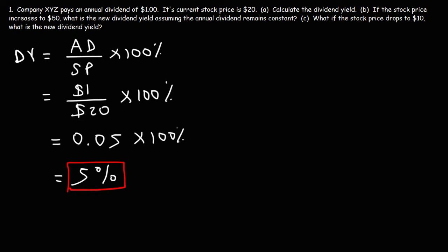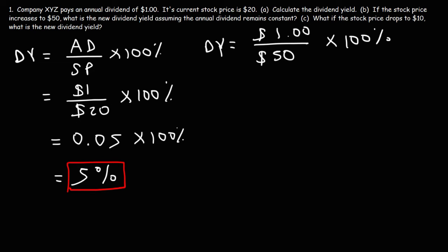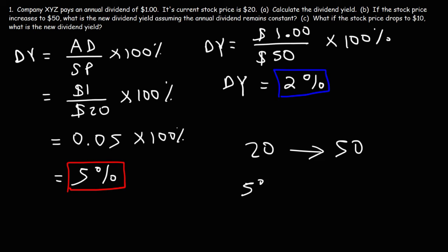Now let's move on to Part B. If the stock price increases to $50, what is the new dividend yield, assuming the annual dividend remains constant? The annual dividend is still $1, divided by the new stock price of $50, times 100%. $1 divided by $50 is 0.02, and 0.02 times 100% gives us a dividend yield of 2%. Notice what happened: as the price went up from $20 to $50, the dividend yield decreased from 5% to 2%. When the price of the stock goes up, the dividend yield goes down.